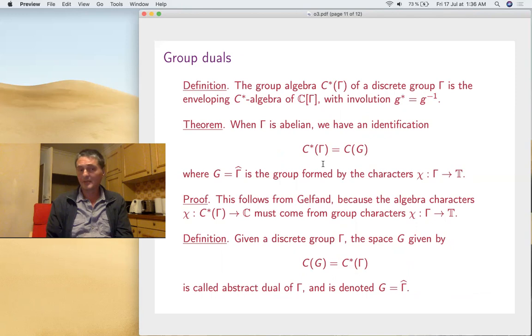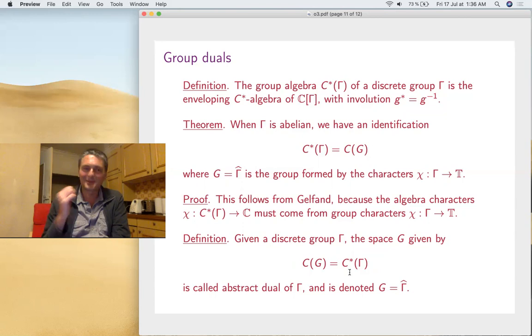Now let's try to understand how this works. My claim is that these tori are actually group duals. You see, given a group, you can complete the group algebra with respect to this involution, and you get a group C*-algebra. In the abelian case, you get exactly the functions on the group of characters. That comes from Gelfand by linearizing. Now, given an arbitrary discrete group, we can define Γ-hat by this formula. It's a noncommutative space which will be fine. Getting back to the tori, you see these four tori we're having are exactly the duals of these groups. In the classical case, it's ℤ² and ℤ²/2ℤ. In the free case, it's the free binary group somehow, and the dual of the free group is the free torus. This is clear because it just looks like the algebra generated by unitaries in various relations, as you've been seeing.